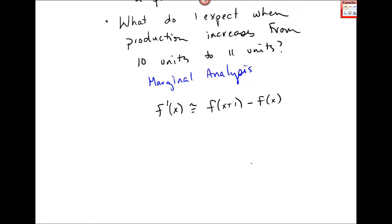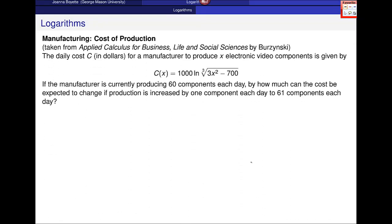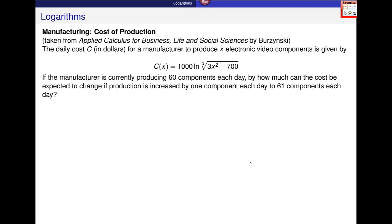So let's talk about this next problem and the problem that you see. It says the daily cost in dollars for a manufacturer to produce x electronic video components is given by this function. If the manufacturer is currently producing 60 components each day, by how much can the cost be expected to change if production is increased by one component each day to 61? So do you see this question asking about changing production from 60 to 61 units?